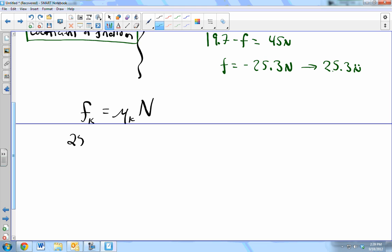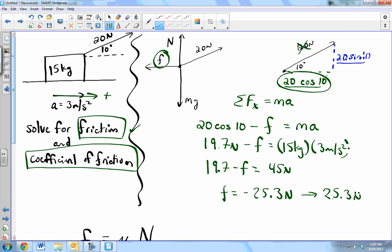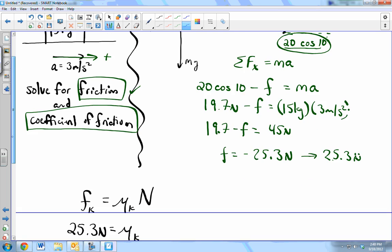It's 25.3 newtons equals mu k. What's the normal force? Now we've got to go back and solve for it. It's this number right here. It's that in the y direction. I get in the habit of capital N. You can call it f then. Well, then I think it's. Yeah, that is the confusion. You can call it f n. Good. Good. Call it f n.